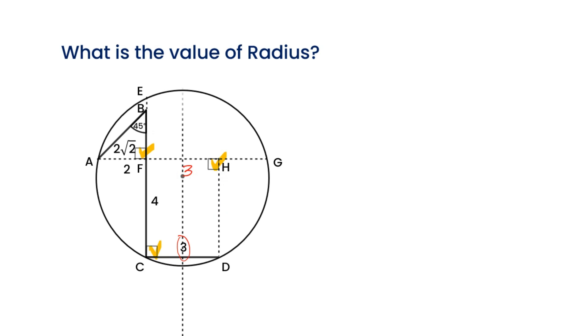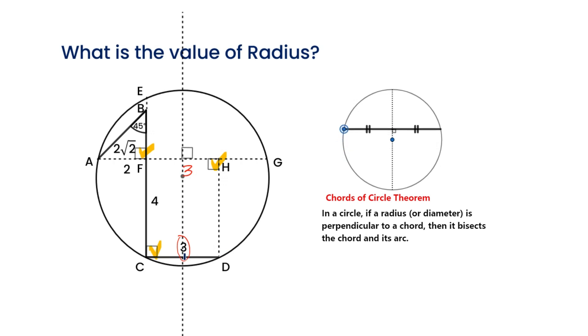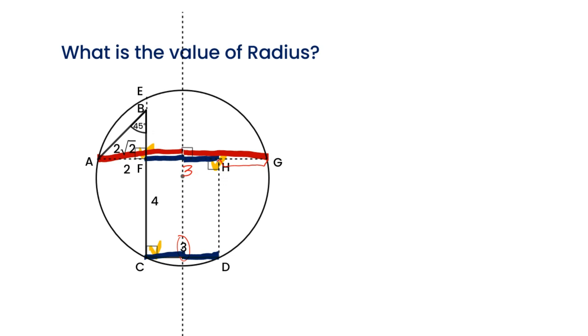Through the central point, make a perpendicular segment to CD and EG. From the chords of a circle theorem, we can get CD is divided equally by the perpendicular segment, and AG is also divided equally by the segment. We can calculate HG equals 2.